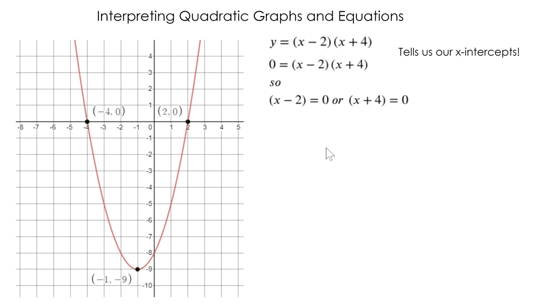What about our standard form? Well standard form we can find easily by just multiplying our factored form and we call that expanding the equation, and some people refer to that as foiling. We can multiply x times x, x times positive 4, negative 2 times x, and negative 2 times positive 4. If we simplify that, we get our standard form and that's x squared plus 2x minus 8.